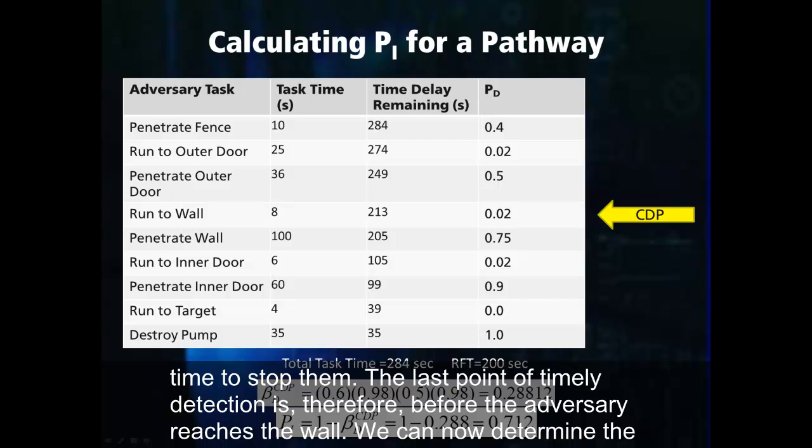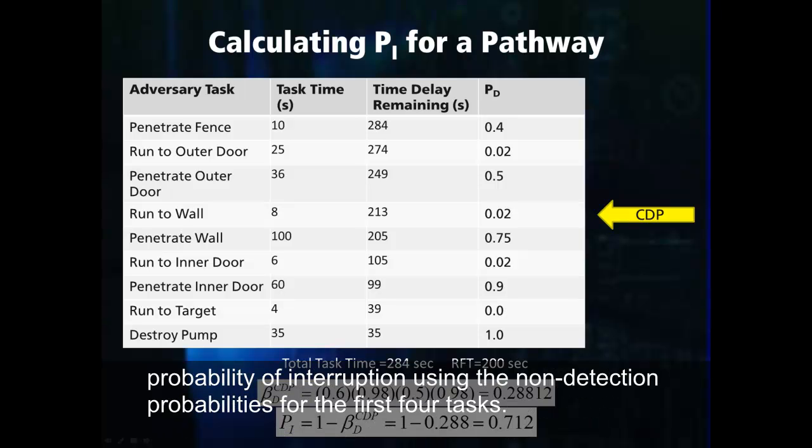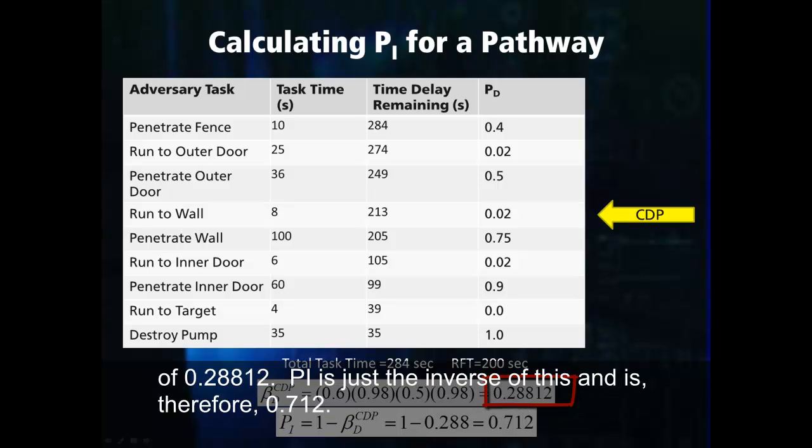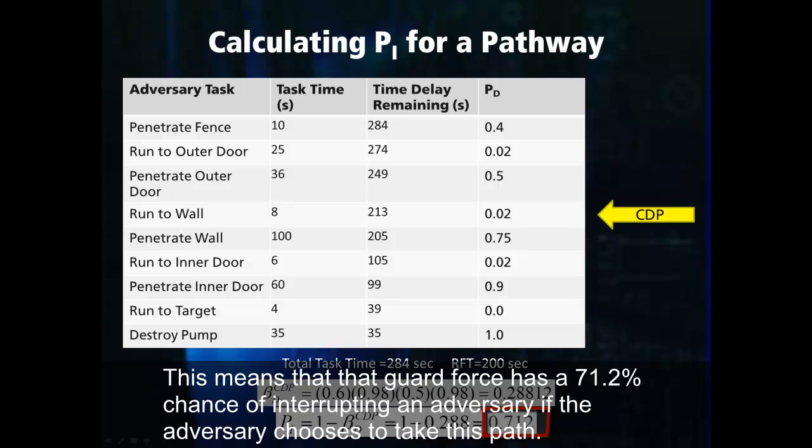We can now determine the probability of interruption using the non-detection probabilities for the first four tasks. The calculation is shown at the bottom of this slide and results in a non-detection probability of 0.28812. PI is just the inverse of this and is therefore 0.712. This means that the guard force has a 71.2% chance of interrupting the adversary if the adversary chooses to take this path.